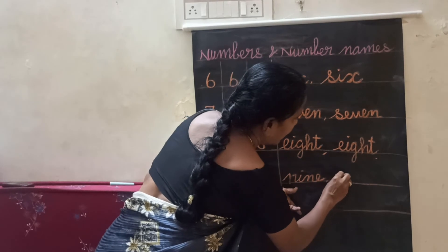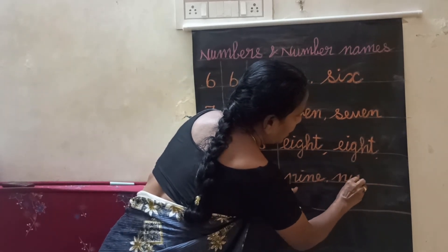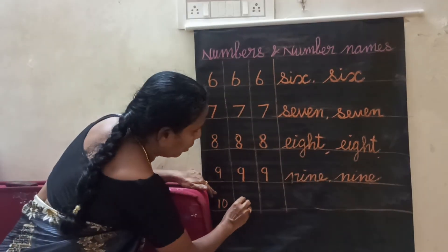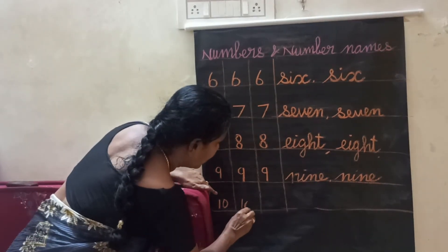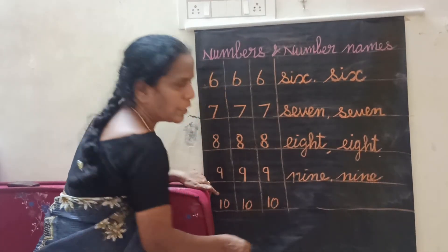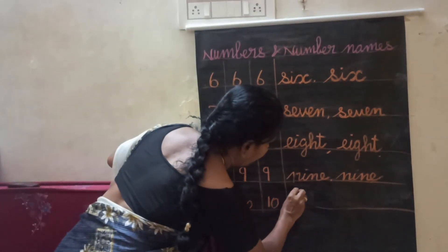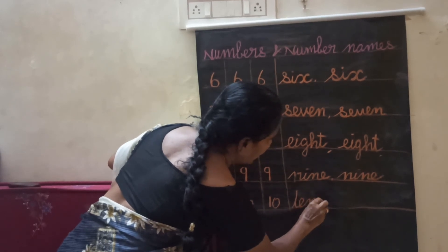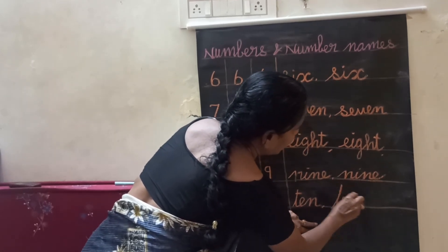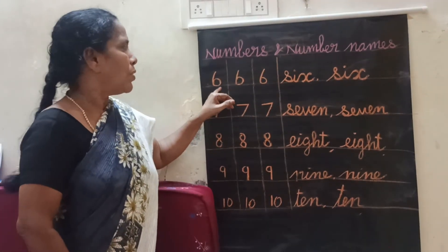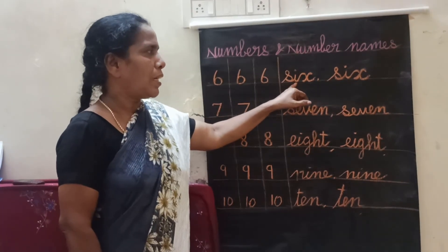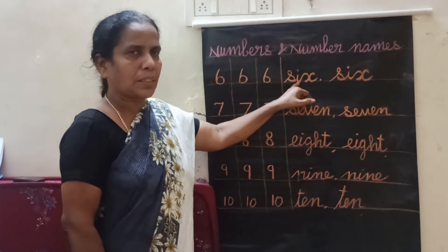N, I, N, E. 9. Next number 10. 1 standing line, 1, 0. 10. 1 standing line, 1, 0. 10. T, E, N. 10. T, E, N. 10. Let us revise. 6, 6. S, I, X. 6.